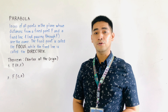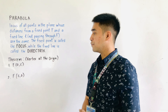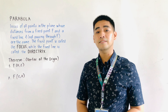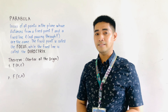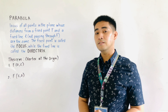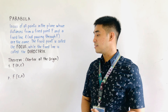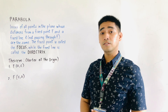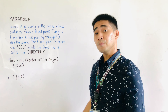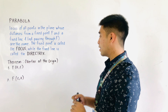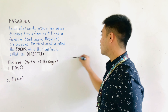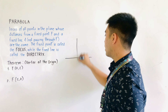So we have two theorems. The first theorem is that the focus is located at (0, c), and the second theorem is that the focus is located at (c, 0). So what is the difference? Before we discuss this, I will first illustrate the different parabolas.